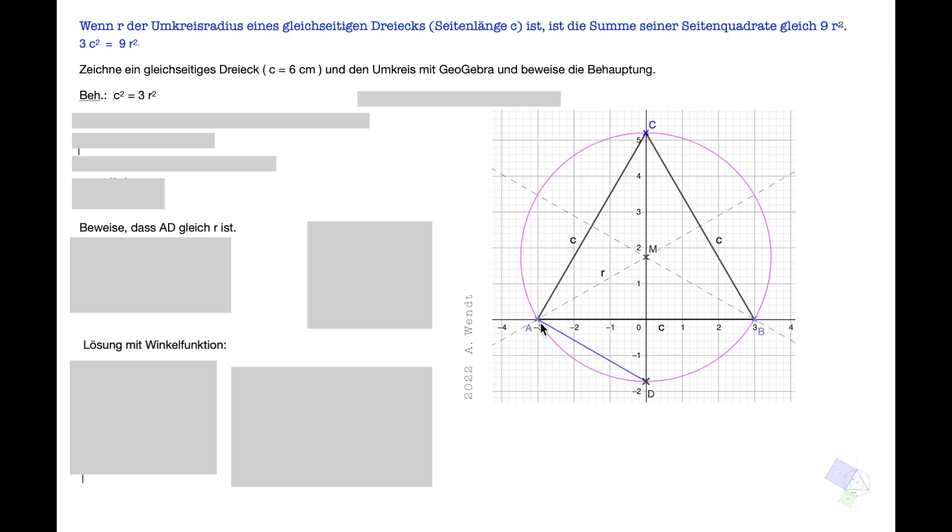AD² plus C² gleich CD². Wir stellen nach C² um, indem wir AD² subtrahieren. Wir halten C² gleich CD² minus AD².